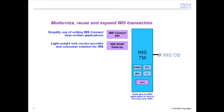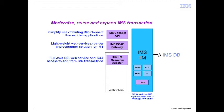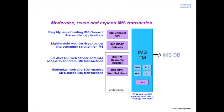We also provide a number of solutions built on top of the IBM WebSphere Application Server. For example, the IMS TM Resource Adapter is a JCA-compliant resource adapter that customers can plug into the Java EE environment and build Java applications — could be EJB, servlet, or plain POJO Java applications — to access IMS transactions. We have extended solutions for MFS as well. With MFS, we have to manage both existing screen layouts and backend messages and transactions. Our IMS MFS Web Solution helps customers reuse and leverage existing MFS transactions.